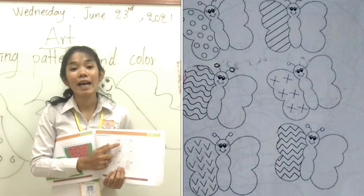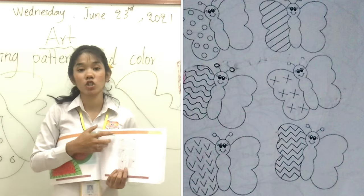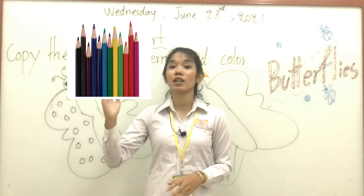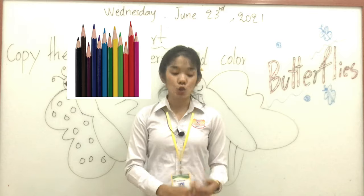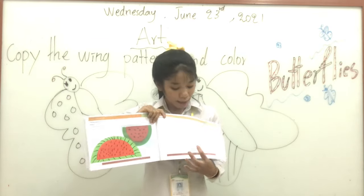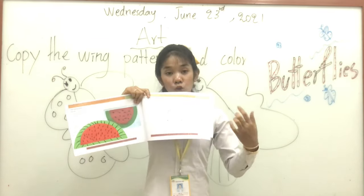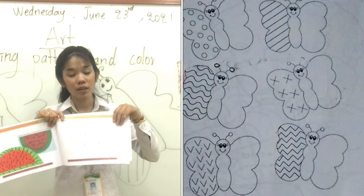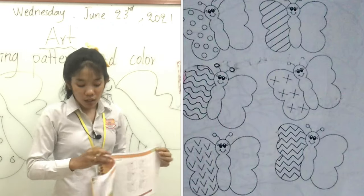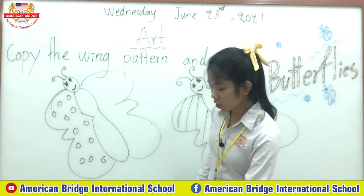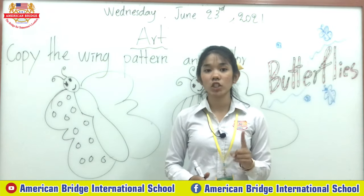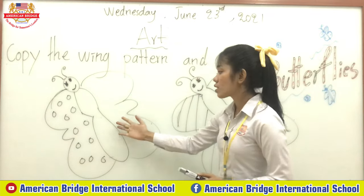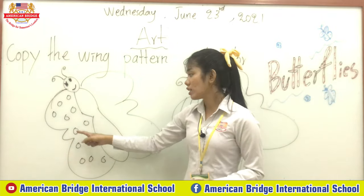Then we color the picture. The materials you need: prepare your color and use a pencil. Use the pencil to copy the pattern, and then use color to color your butterfly. Here is an example — teacher has drawn two butterflies.